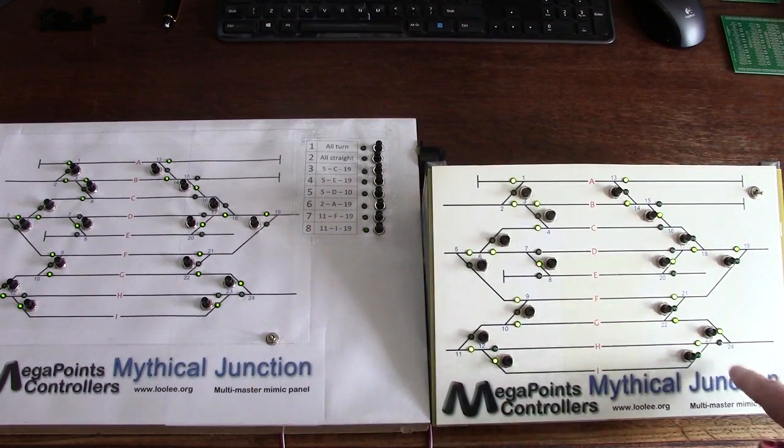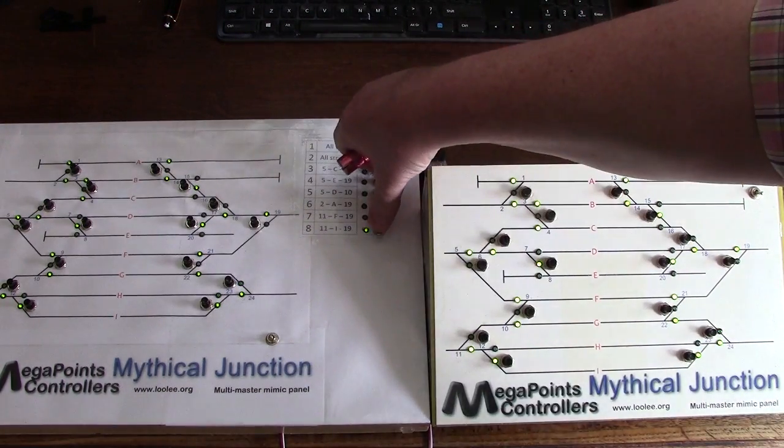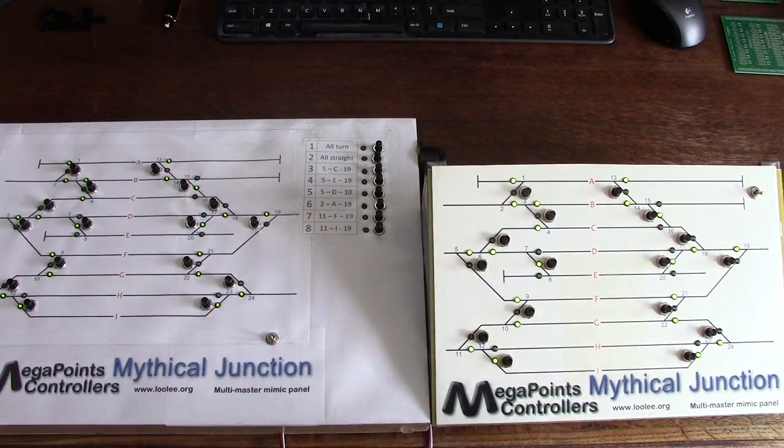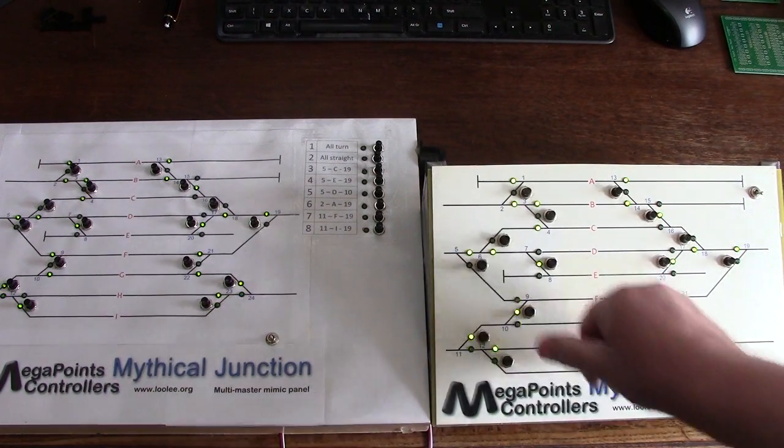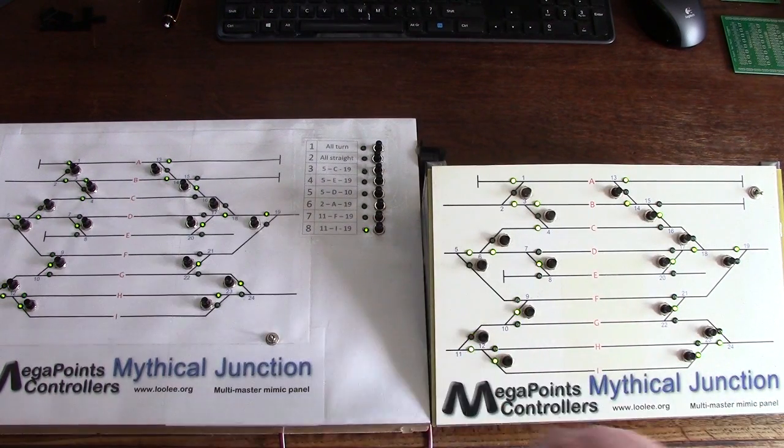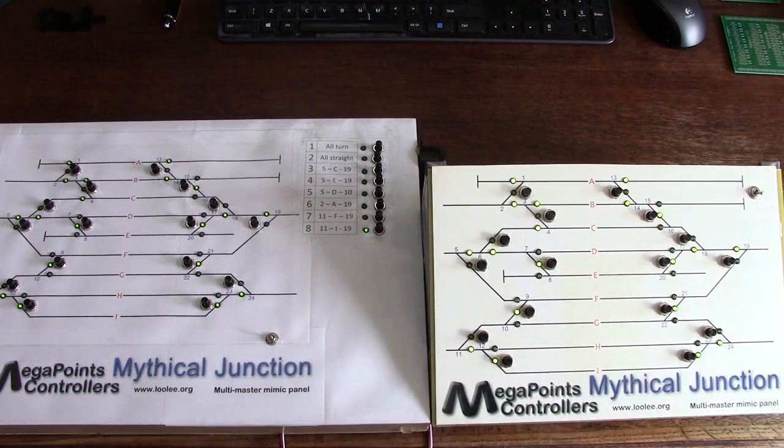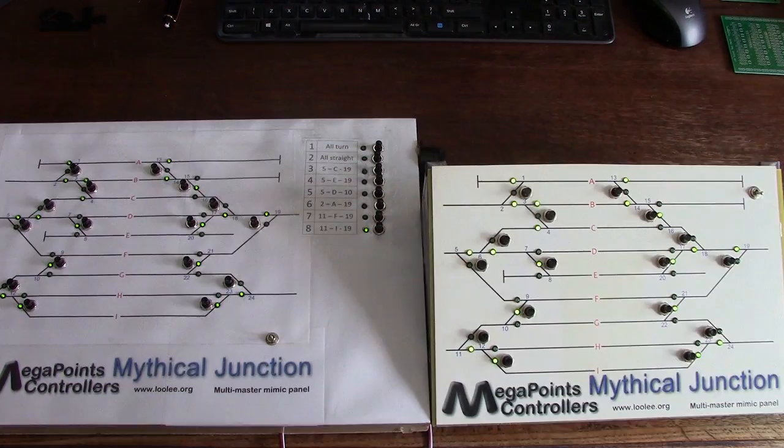Now we press the route button again, it stops flashing, now it's programmed. Let's reset this route and now I'll bring it on by pressing the button and here we come: the four components have been set. Eleven down via I, back up and out via 24. Thanks for watching.